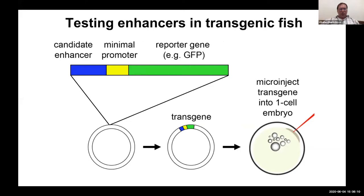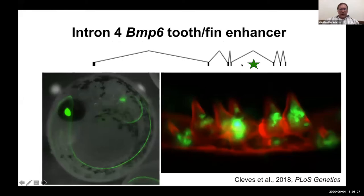We wondered what this intron was doing, and Phil had the immediate hypothesis that it could be an enhancer. Fish are great for studying enhancers because we can easily get one-cell embryos to inject reporter gene constructs into. When Phil did that, he found that this intron of BMP6 is a robust fin and tooth enhancer. The promoter drives lens expression as a positive control, while the enhancer domain includes the distal edge of the pectoral fin and a stripe along the median fin. But in teeth, we saw robust GFP expression in developing teeth — all teeth in both the oral jaw and pharyngeal jaw, including unerupted teeth underneath that we hypothesize could be stem cells for tooth replacement.